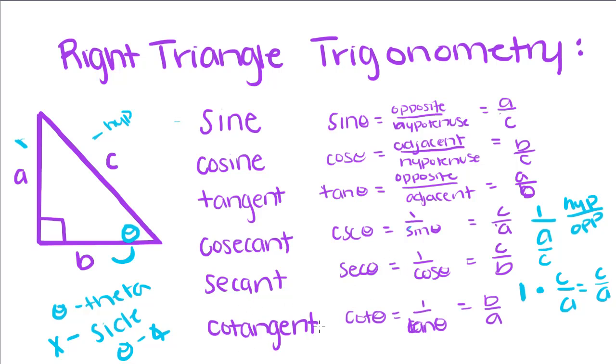For cotangent, it's just the same as 1 over tangent. Tangent is A over B. So, the same rule applies, where we just flip them, and this becomes B over A, which is the same thing as adjacent over opposite. We're going to use these formulas to talk about the angles of a triangle.